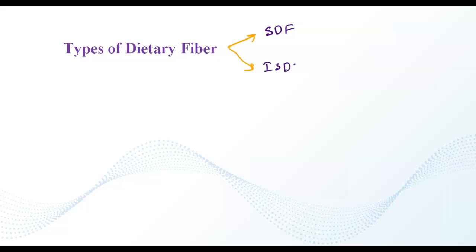Soluble dietary fiber includes pectin which is present in the middle lamella of the cell wall. Insoluble dietary fiber includes cellulose, hemicellulose, and lignin which are not soluble in water.